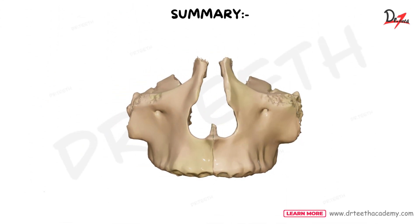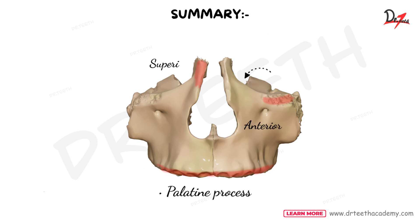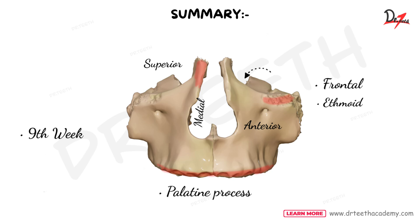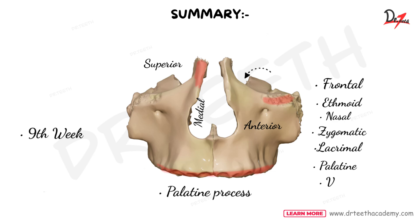Now let's summarize. The maxilla, also known as the upper jaw, consists of four projections: frontal process, zygomatic process, palatine process and alveolar process. It has four surfaces: anterior, posterior, superior and medial. Each maxilla ossifies from two main combined centers, one for the maxilla proper and one for the premaxilla. These fuse early in human development at about the ninth week in utero. Each maxilla articulates with nine bones: frontal, ethmoid, nasal, zygomatic, lacrimal, palatine bone, vomer, inferior nasal concha, as well as the maxilla of the other side.